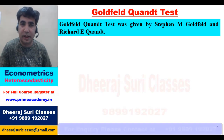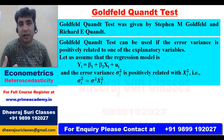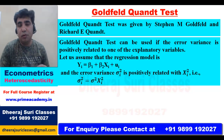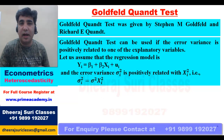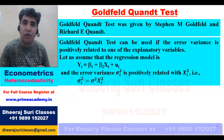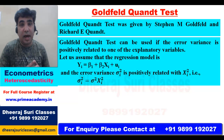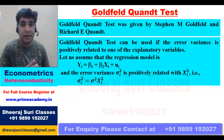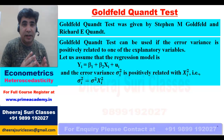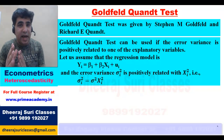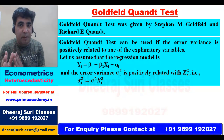When do we use this test? It can be used when error variance is positively related to one of the explanatory variables. We can use the Goldfeld-Quandt test if error variance is positively related — that is, when error variance and some explanatory variable have a positive relationship.